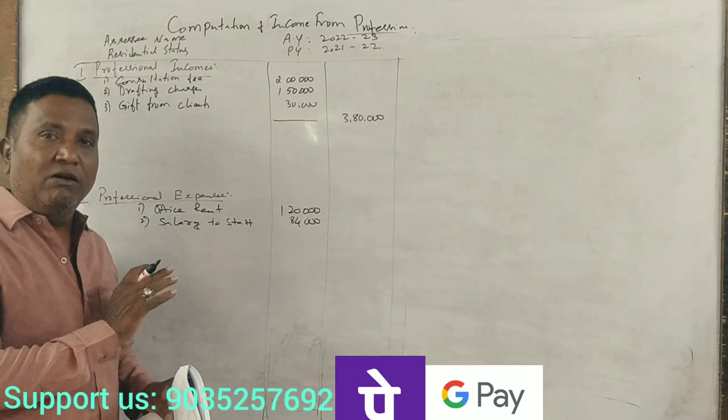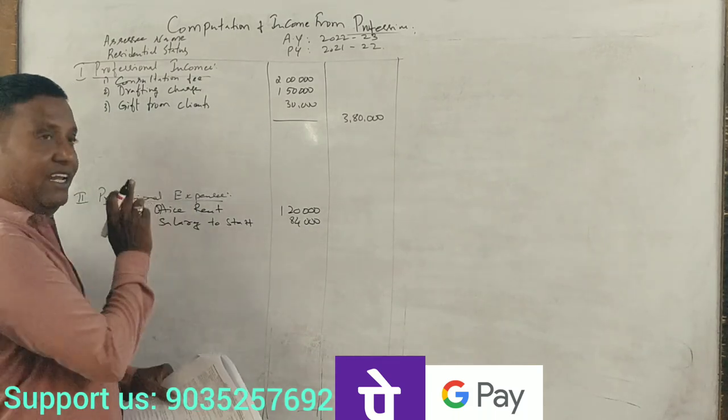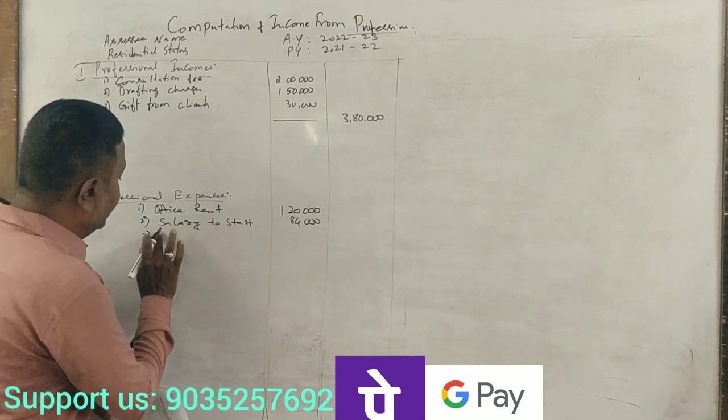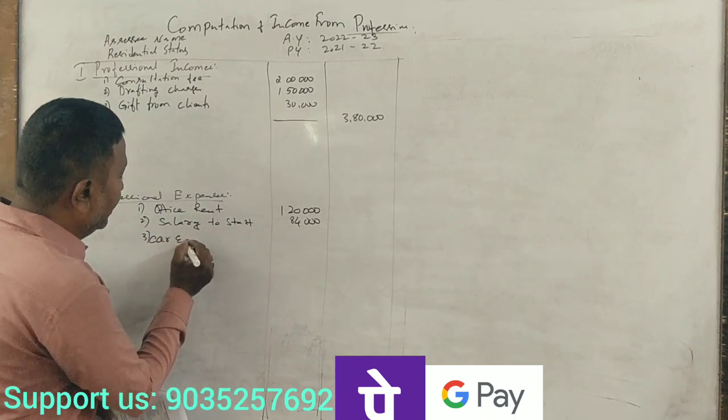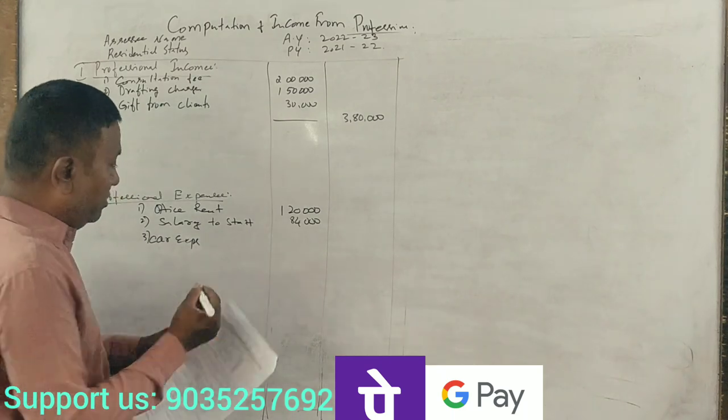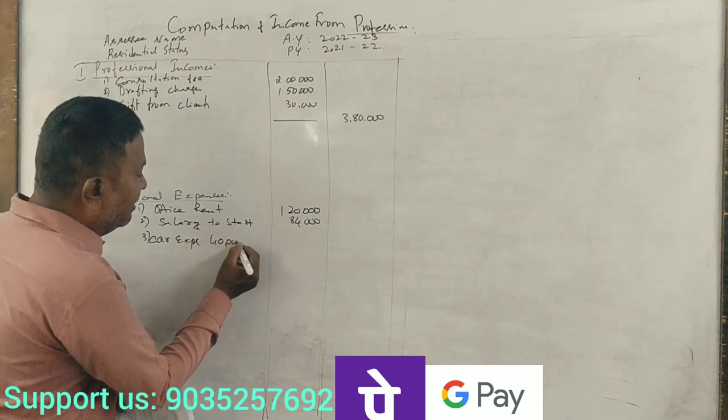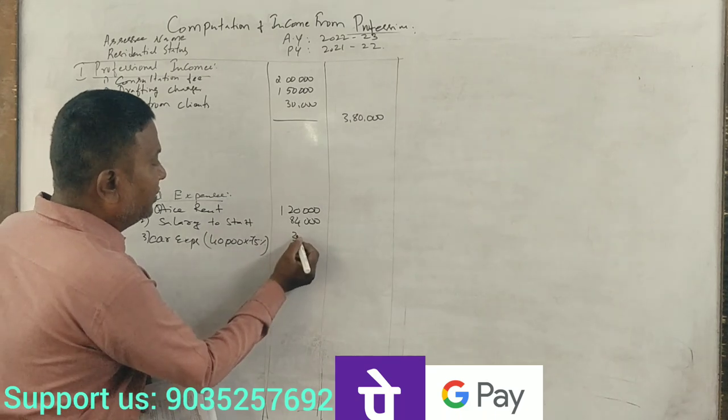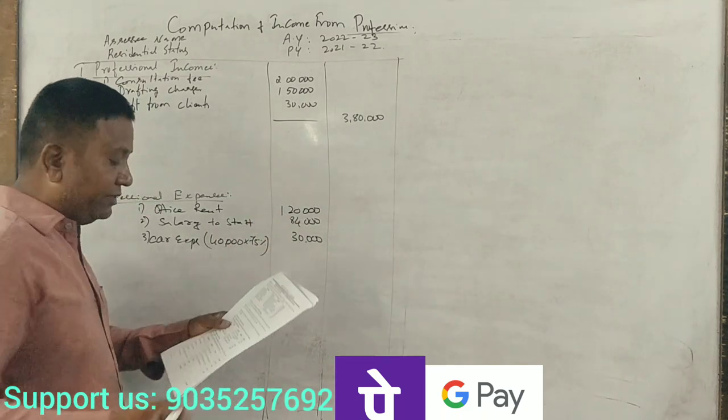For professional expenses, car expenses total $40,000 deductible. Other amounts include $75,000, $30,000, and $50,000 for various professional expenses.